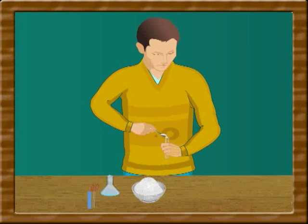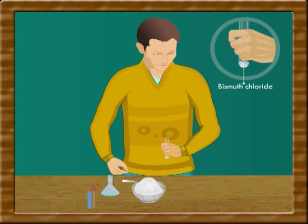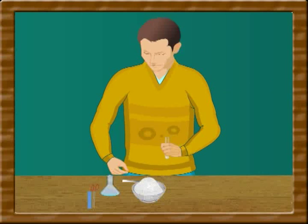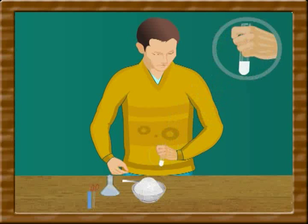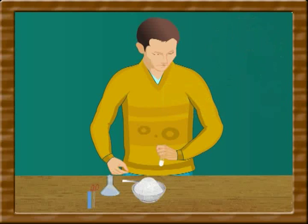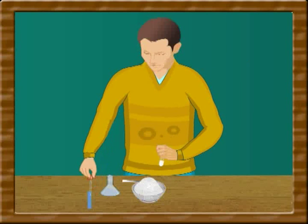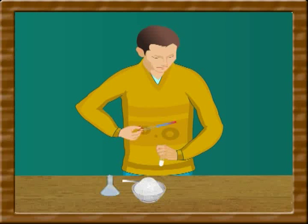Take a long test tube in which take 1 gram of bismuth chloride. It is a white solid. To dissolve this, add 5 ml of water and shake. A milky white suspension is now seen in the test tube. This white suspension is bismuth oxychloride and hydrochloric acid. The presence of acid can be tested by a blue litmus paper. It will turn red.